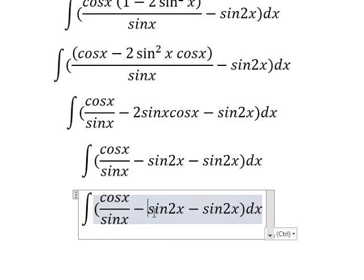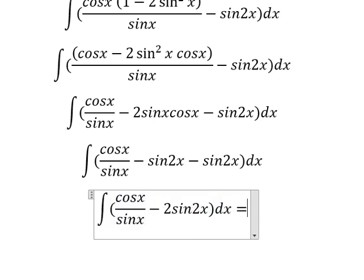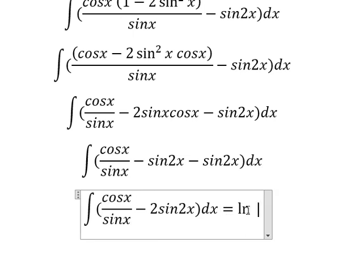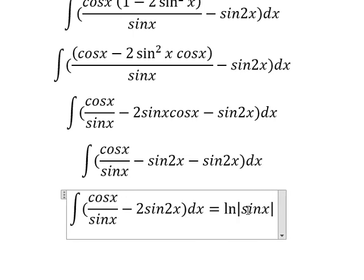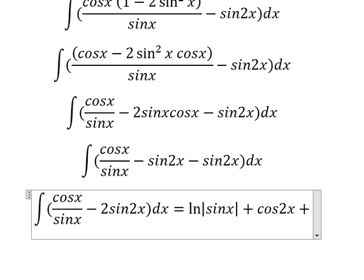And we have this part in here. The integration of this one we have ln of the absolute value of sine x. The integration of this one we have cosine 2x, and I will put the constant C.